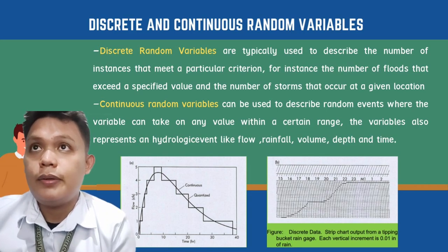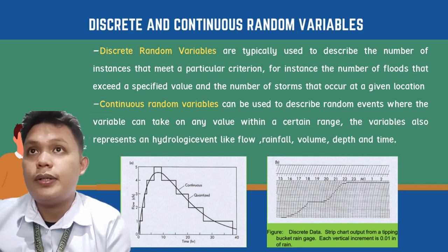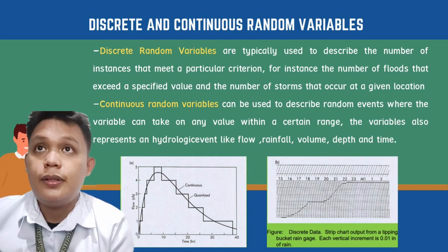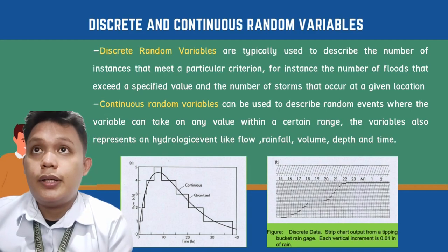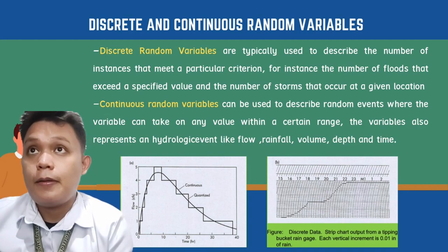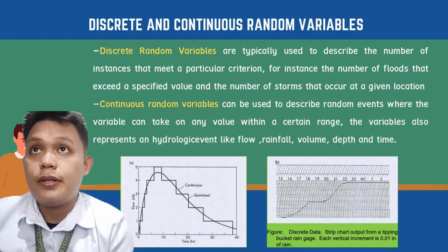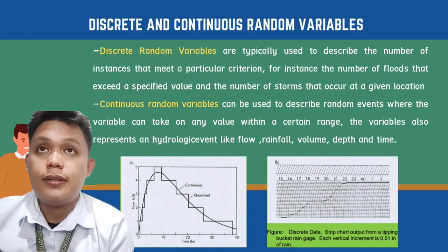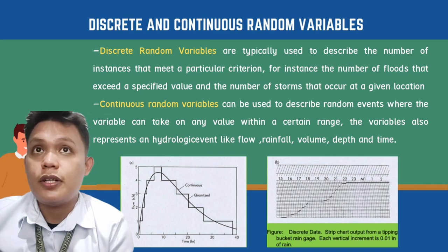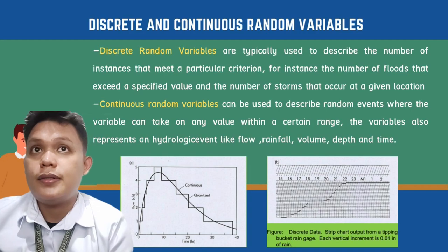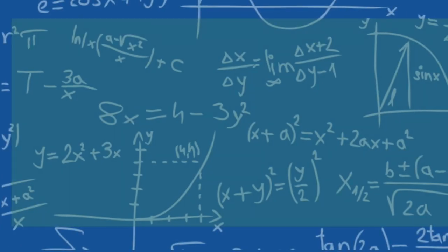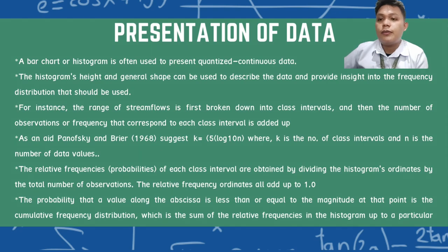In the figure, the y-axis is flow and the x-axis is time. The smooth line represents continuous data, while the staircase-like line represents quantized data. The discrete data street chart output from a tipping bucket rain gauge has a vertical increment of 0.01 and a total increment of 0.08.